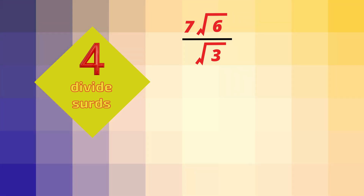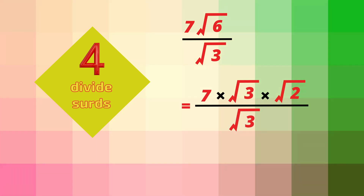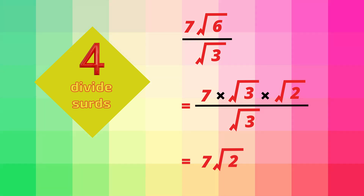Let's do a more complicated question — it's not harder, just longer. What is 7 root 6 divided by root 3? Notice that root 6 is really root 3 times 2, so root 6 is really root 3 times root 2. Now we divide root 3 on the top by root 3 on the bottom of the fraction. What's left is the answer: 7 root 2.